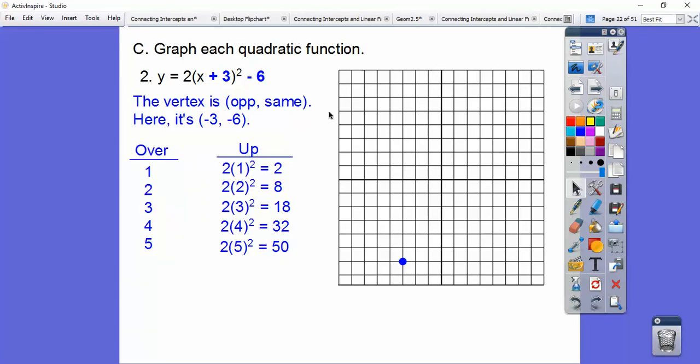So when we go over 1, it goes up 2. When we go over 2, it goes up 8. Over 3, I don't have enough room, but it would go up 18, and then 32, and then 50. So we square how much we go over, and then multiply it by 2 because of that 2 right there. So I'll do these guys right here, over 1 up 2, over 2 up 8. And then there's our groovy looking parabola right there.